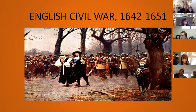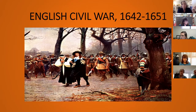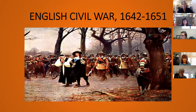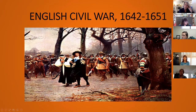The Scots capture Charles and hand him over to Parliament. He escapes briefly, more fighting ensues, and his supporters are defeated again at the Battle of Preston in 1648 — which is why many boys in that era were named Preston. When defeated again, Charles is turned over to Parliament. For the first time in European history, a sitting monarch is declared guilty of waging war against his own people.